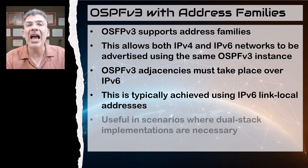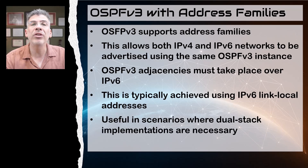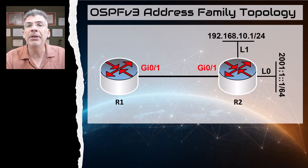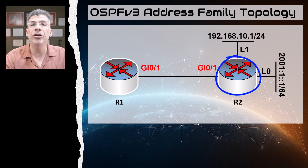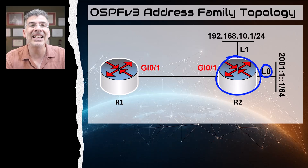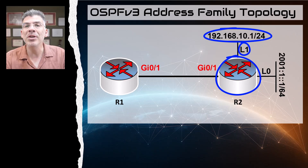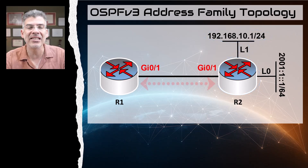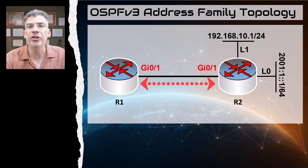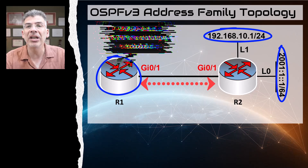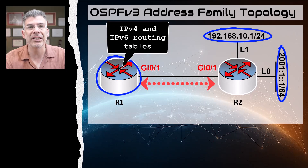This is what is known as a dual-stack scenario, where both IPv4 and IPv6 protocol stacks are in use. Here we have R2 with a loopback 0 interface assigned an IPv6 address and loopback 1 assigned an IPv4 address. We'll create an OSPF version 3 adjacency between R1 and R2 such that R1 will have both of these networks in its corresponding IPv4 and IPv6 routing tables.